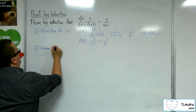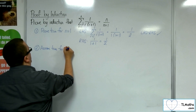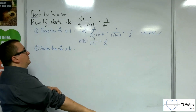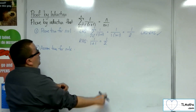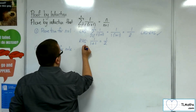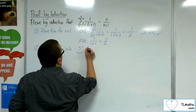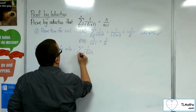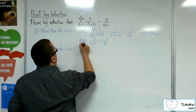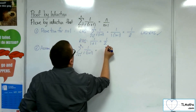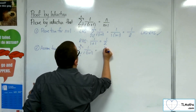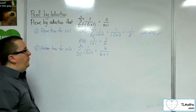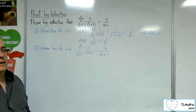Now let's assume true for n equals k. So the summation of 1 over r times r plus 1 from r equals 1 up to k is equal to k over k plus 1. We're going to assume that it's true for n equals k.